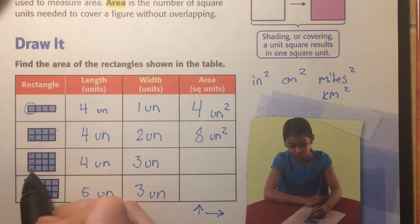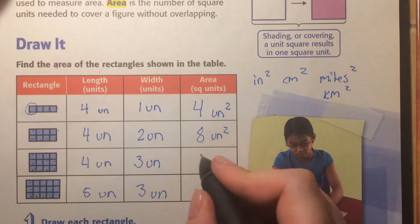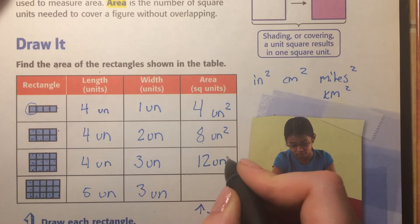One, two, three. One, four, five, six, seven, eight, nine, ten, eleven, twelve. Twelve units squared.